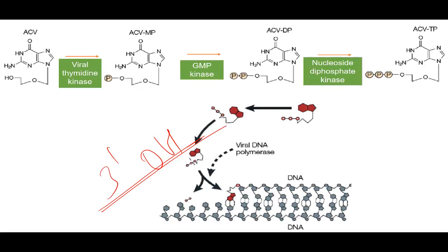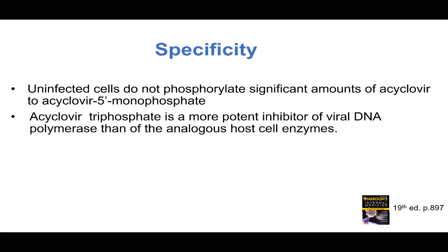Now the question is, how can we say that acyclovir is specific to the viral infected cell? Won't it go and affect the normal cell? So the answer is, in Harrison, uninfected cells, that is the normal cells, they do not phosphorylate significant amounts of acyclovir. The reason is acyclovir has highest affinity to viral thymidine kinase.